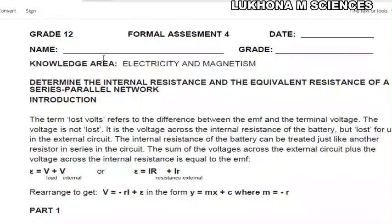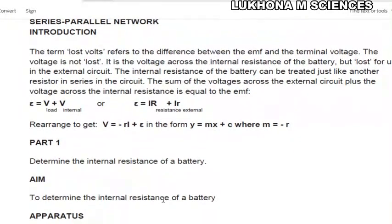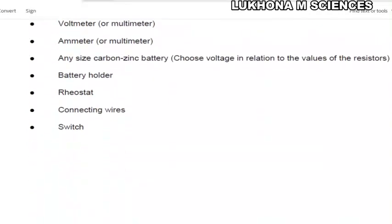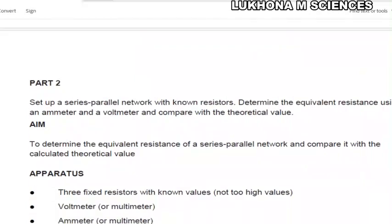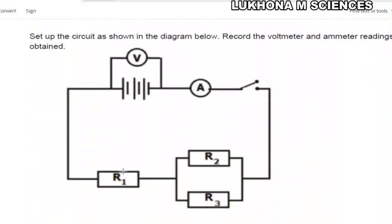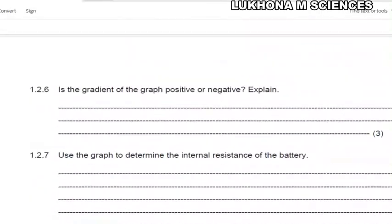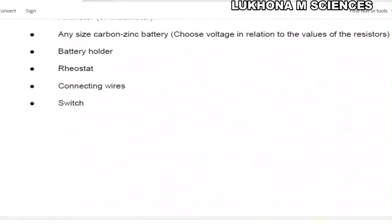Good day everyone. We are going to do the Grade 12 formal assessment. The topic is electricity and magnetism. The aim is to determine the internal resistance of the battery. We have Part 1 and Part 2. Part 1 we determine the internal resistance, and Part 2 covers parallel and series resistance connections.